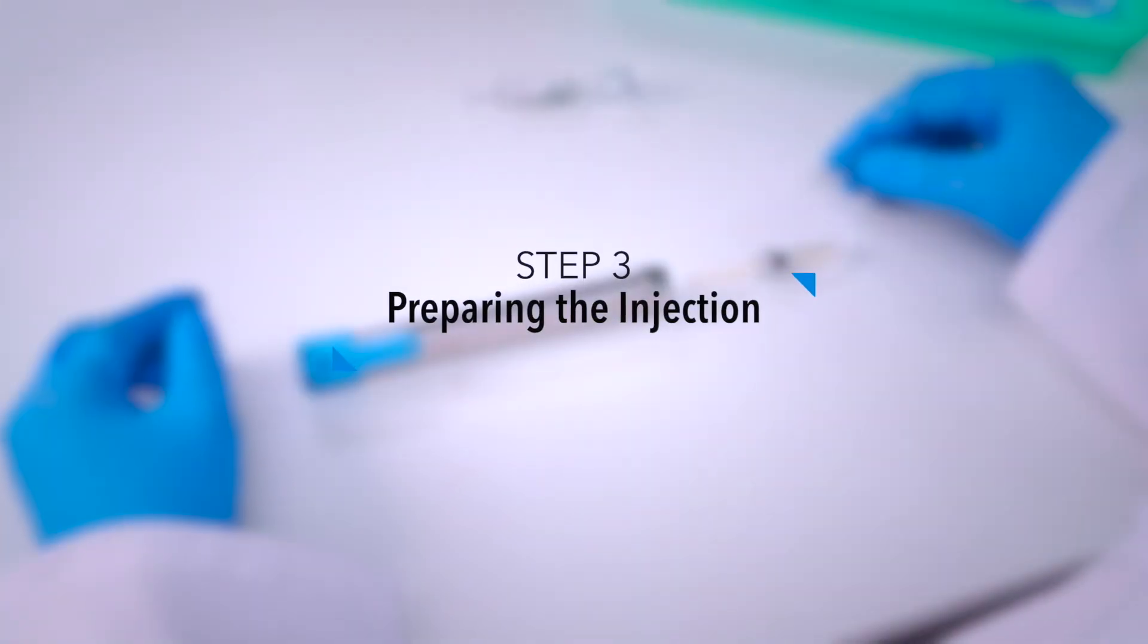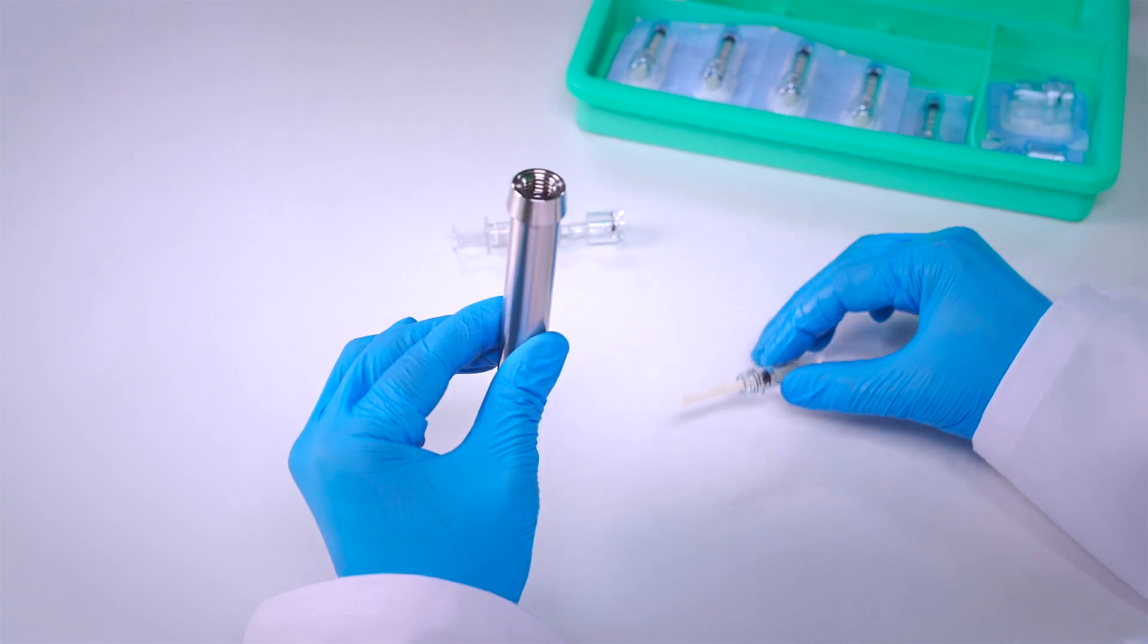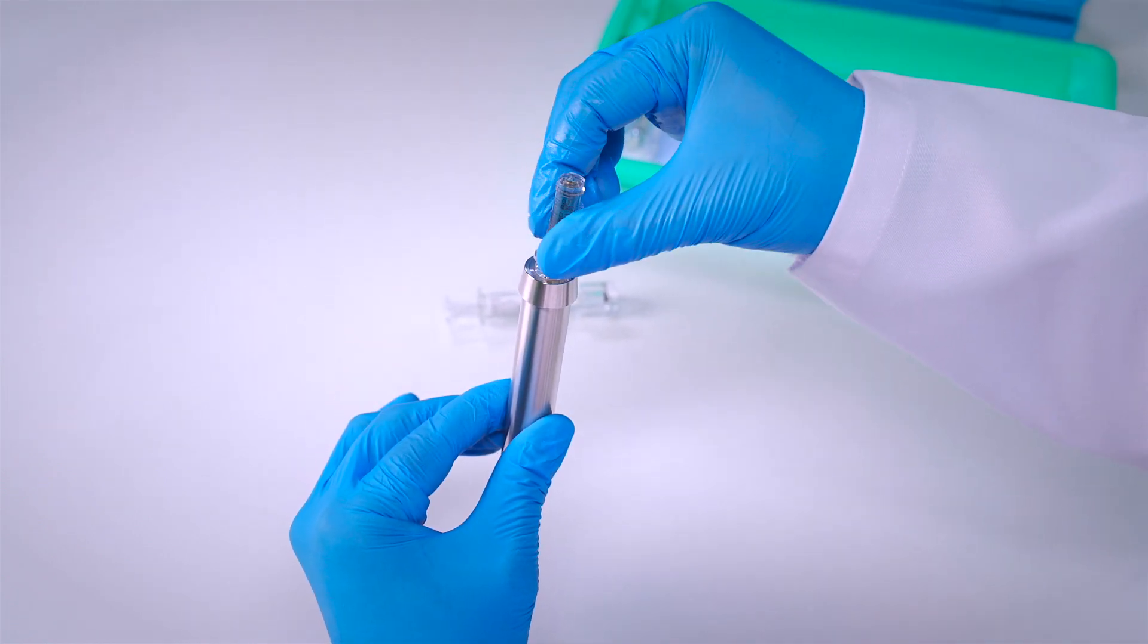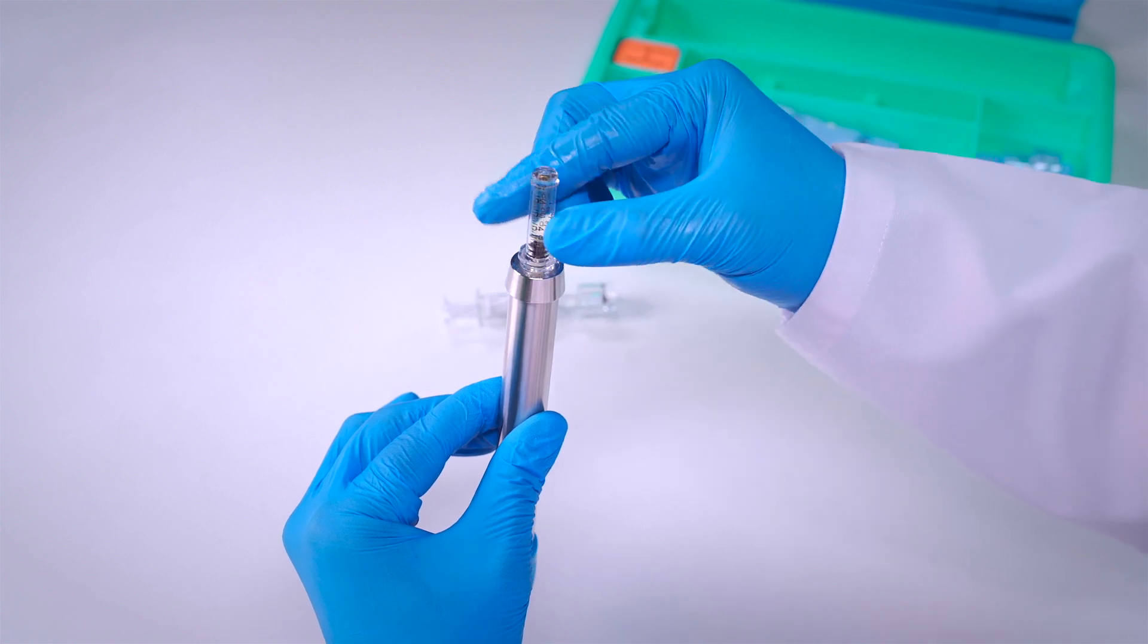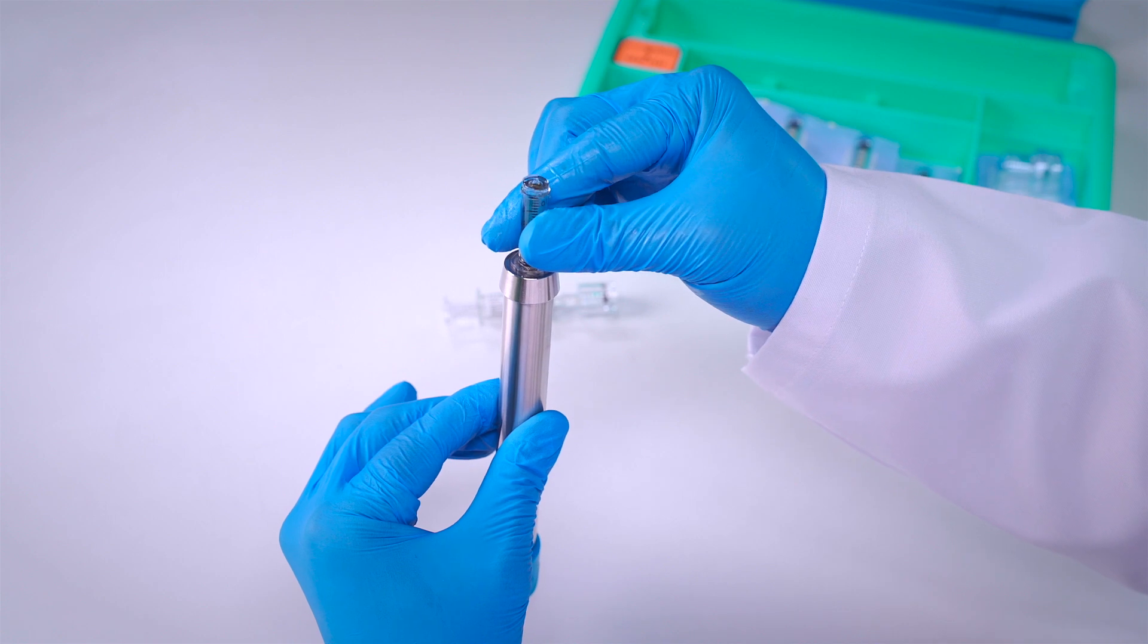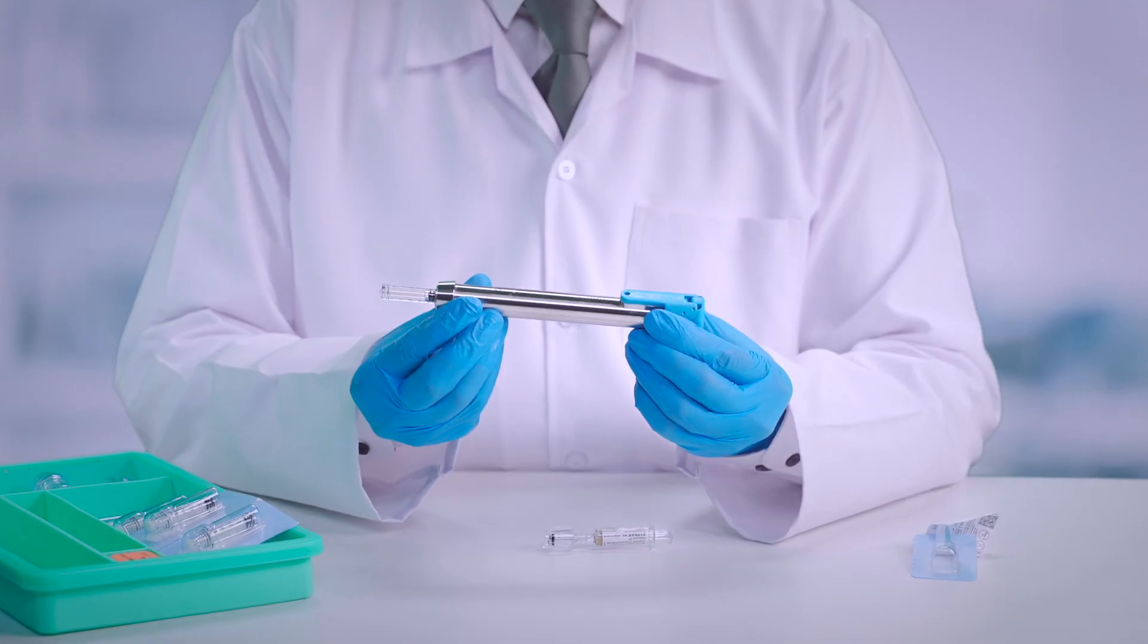Step 3: Preparing the injection. Insert the filled cartridge plunger down into the loaded NFIS device and turn it clockwise until secure. The system is now ready to use.